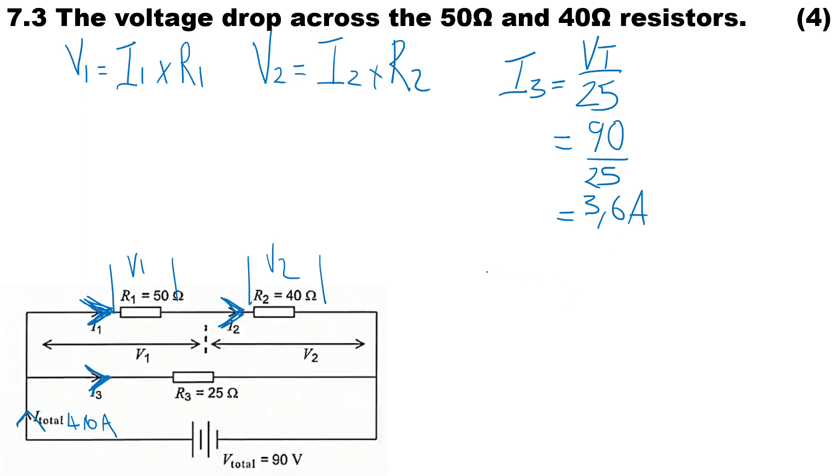Now we can actually determine the value of I1 and I2 - remember they're exactly the same. How will we do that? We will say I_total minus I3. I_total is 4.6 amps and I3 is 3.6 amps, so therefore in the series combination, the current there will be 1 amp.